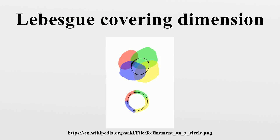Homeomorphic spaces have the same covering dimension; that is, the covering dimension is a topological invariant. The Lebesgue covering dimension coincides with the affine dimension of a finite simplicial complex. This is the Lebesgue covering theorem. The covering dimension of a normal space is less than or equal to the large inductive dimension. The covering dimension of a normal space X is n if and only if for any closed subset A of X, if a map to the n-dimensional sphere is continuous, then there is an extension of that map.